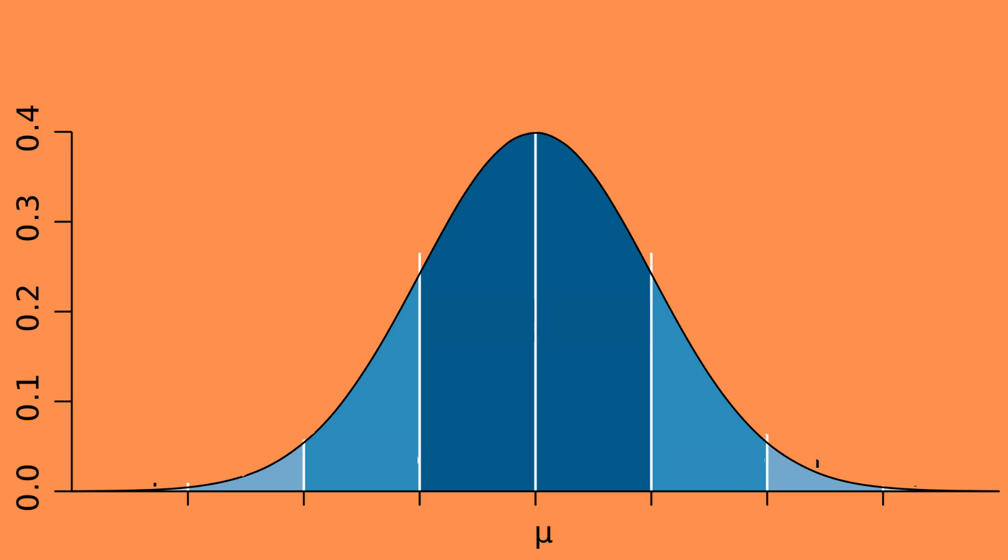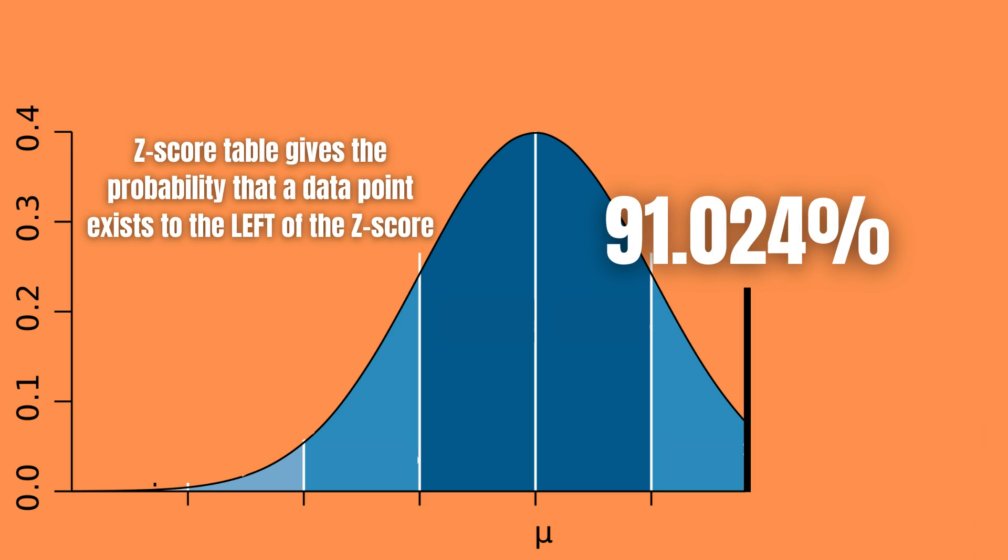Again, this is because the z-score table gives us the probability that a data point exists to the left of the z-score.